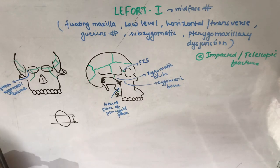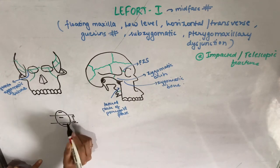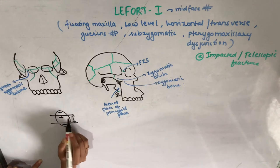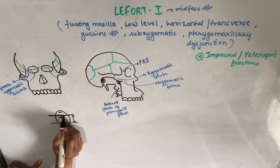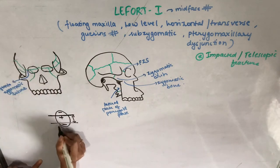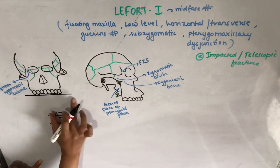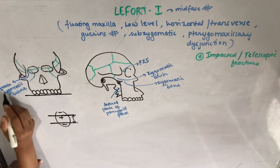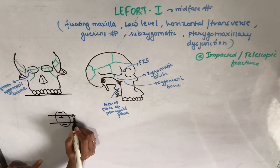Starting with Le Fort 1, it is a mid-face fracture. The face is divided into three parts: upper, middle, and lower. The middle face extends superiorly from the frontozygomatic suture on either side and inferiorly to the occlusal plane of the maxilla. This region is defined as the mid-face.